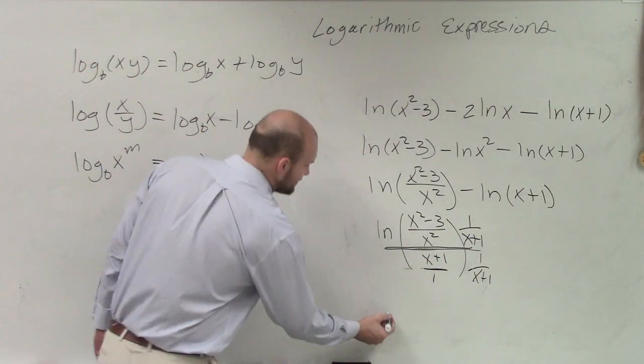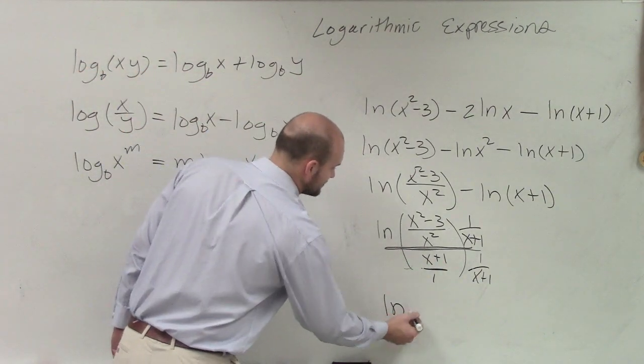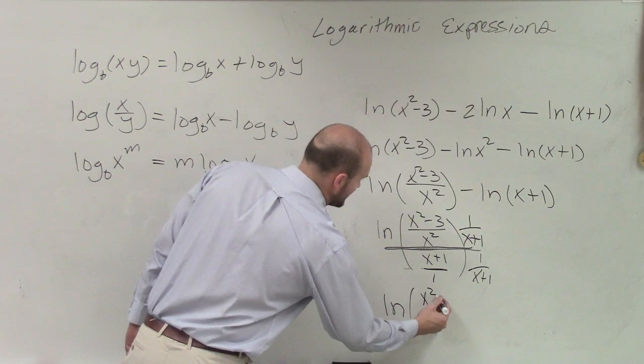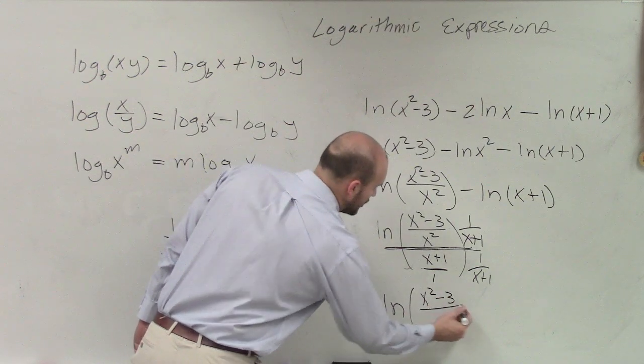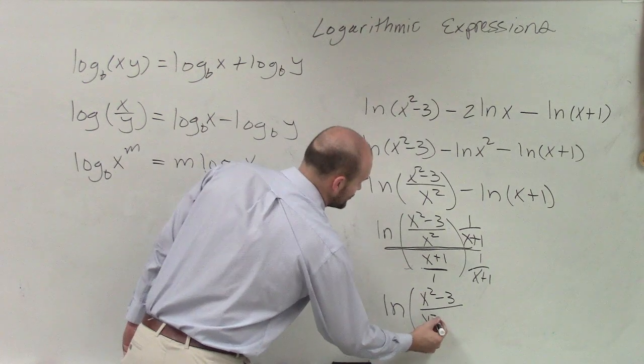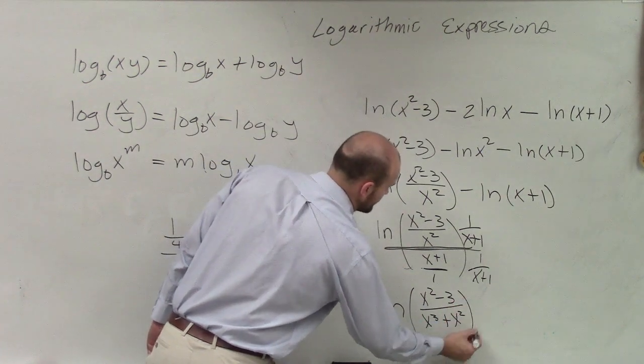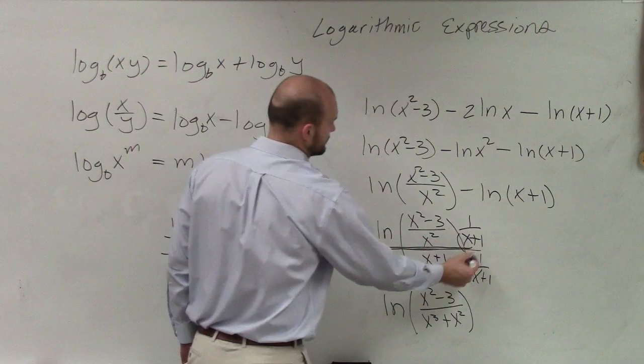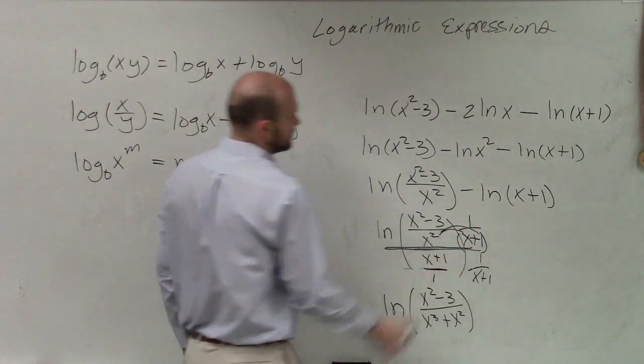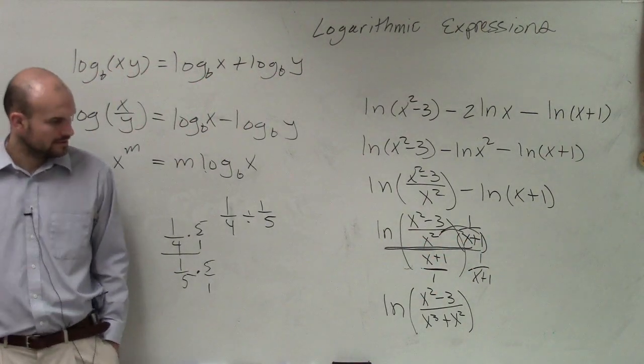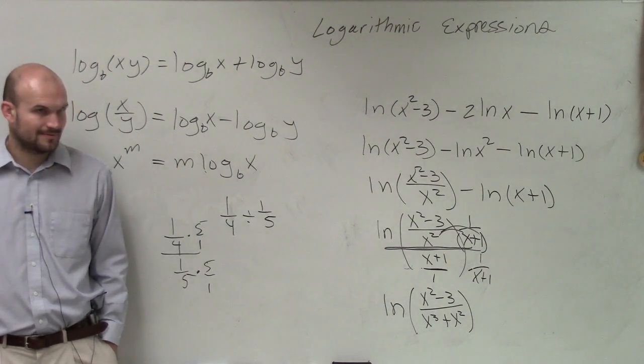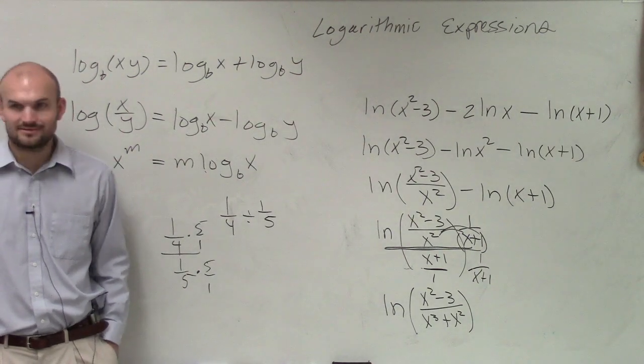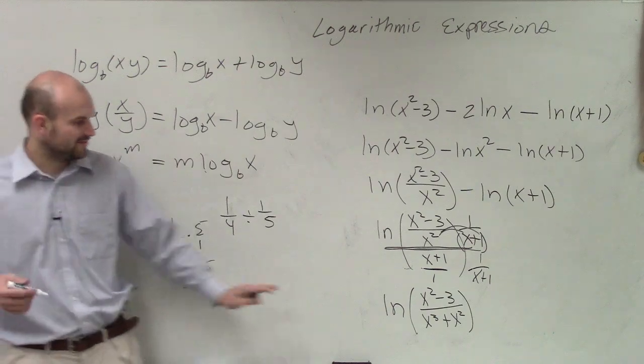OK? So now my final answer is ln of x squared minus 3 over x cubed plus x squared as I multiply that out. OK? Cool? Yes? No? Maybe so? So that'll be your final answer.